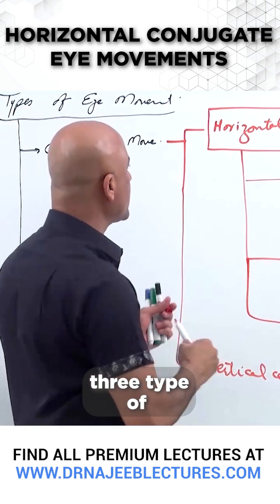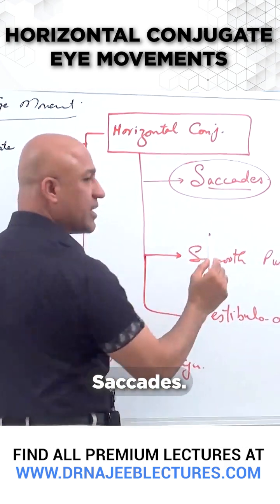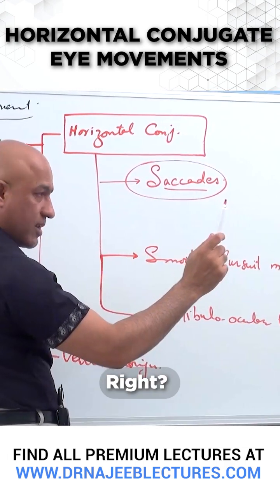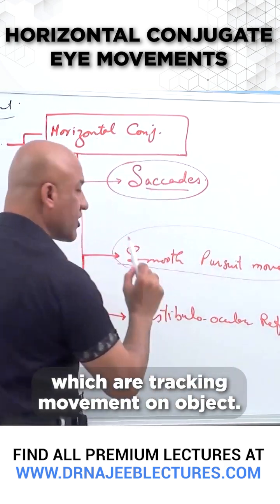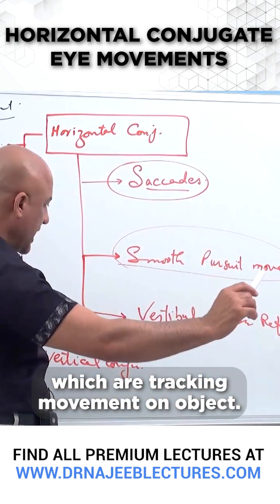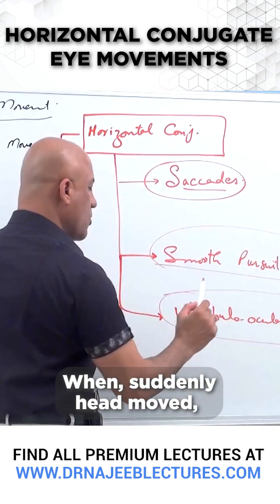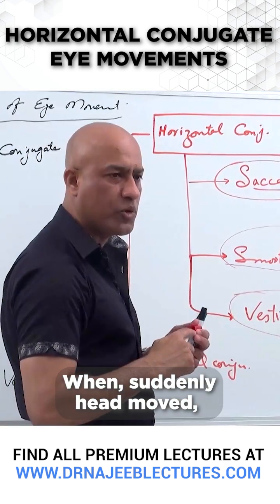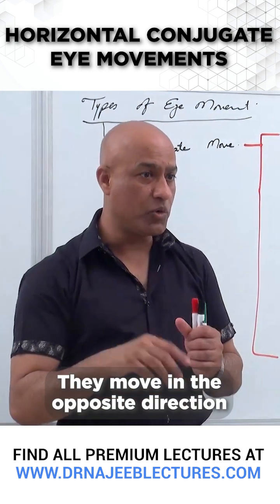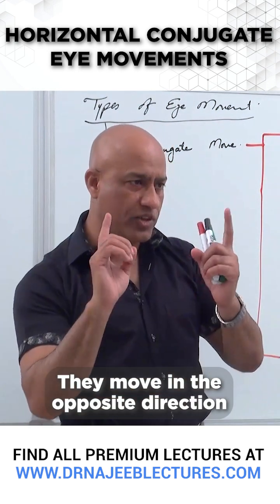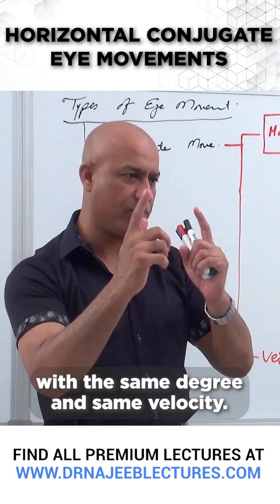These are basically three types of horizontal conjugate movements: saccadic — voluntary rapid movements; smooth pursuit movement, which are practically tracking movements; and the Vestibulo-Ocular Reflex — when the head suddenly moves, the eyeballs maintain focus by moving in the opposite direction of the head with the same degree and same velocity.